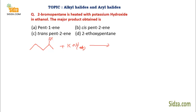With KOH in alcoholic medium you get an alkene. In aqueous medium, you get a nucleophilic substitution reaction, because hydroxide in alcoholic medium acts as a strong base, taking the proton from the beta position. In aqueous medium, hydroxide acts as a strong nucleophile and replaces the bromine, giving you an alcohol. So in aqueous medium you get substitution, but in alcoholic medium you get an alkene via dehydrohalogenation.